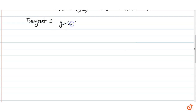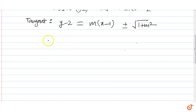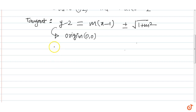अब अगर tangent की equation slope form में इस circle के लिए लिखे तो वो हो जाएगी y - 2 = m(x - 1) ± √(1 + m²). यह general equation of tangent in the slope form for the circle. और question में बोला कि यह tangent origin से pass कर रही है, मतलब (0,0) इस equation को satisfy करेगा, so just put x = 0 and y = 0 in the equation of tangent.